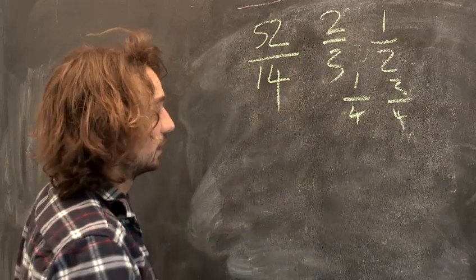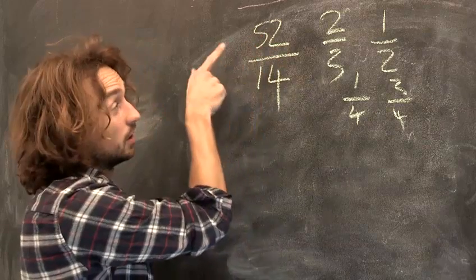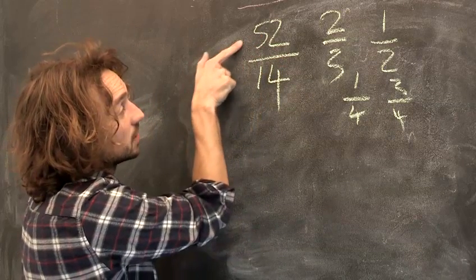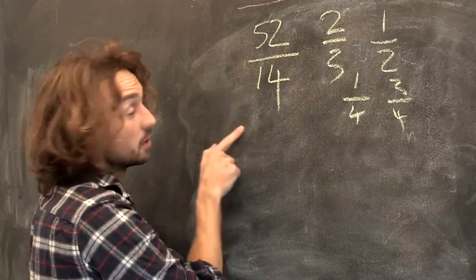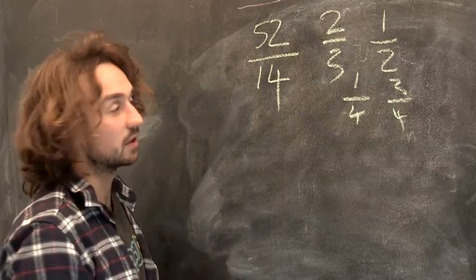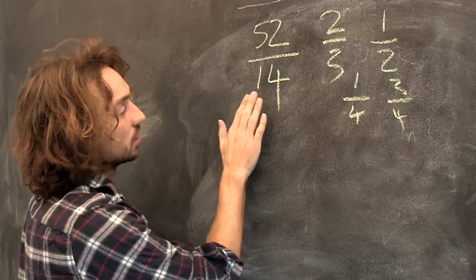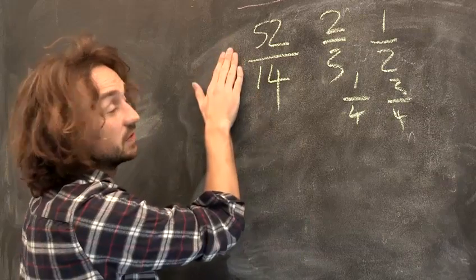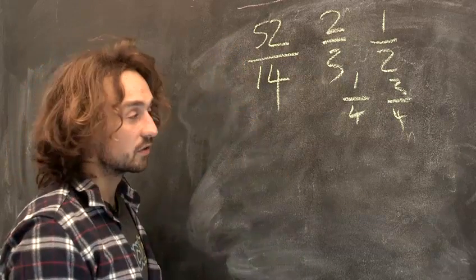Now to do that, you have to look for a number that multiplies to make this, a number that multiplies to make this, or put differently, what goes into 14 and what goes into 52. And we look for the same thing.